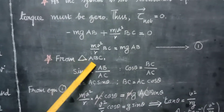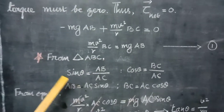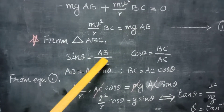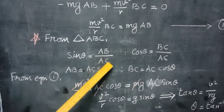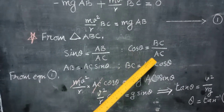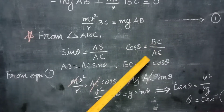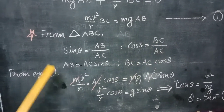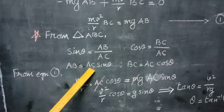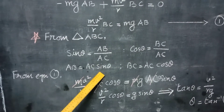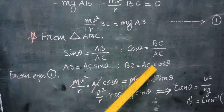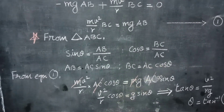From triangle ABC: sin θ = AB/AC and cos θ = BC/AC. Therefore, AB = AC·sin θ and BC = AC·cos θ.